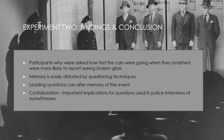They found that participants who were asked how fast the cars were going when they 'smashed' were more likely to report seeing broken glass. This suggests that memory is easily distorted by questioning techniques, and information acquired after the event can merge with the original memory, causing inaccurate recall or reconstructed memory. The results from experiment 2 suggest that this effect is not just due to response bias, because leading questions actually altered the memory participants had after the event. The addition of false details to a memory of an event is referred to as confabulation. This has important implications for the questions used in police interviews of eyewitnesses.